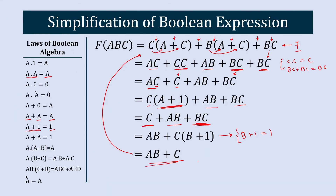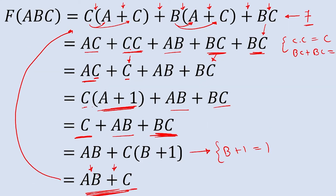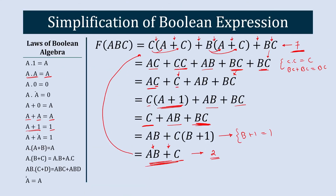To represent the simplified equation, we need only two gates — an OR gate and an AND gate. Before simplification we used seven gates, so this demonstrates the impact of Boolean expression simplification. Before moving to the next example, can you identify which laws of Boolean algebra we used? One hint: the identity law A·A equals A.